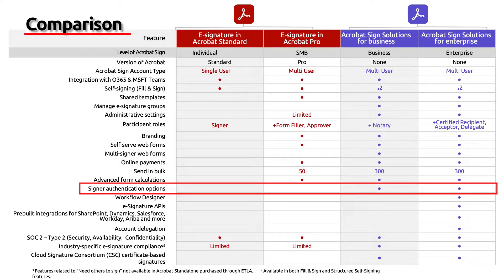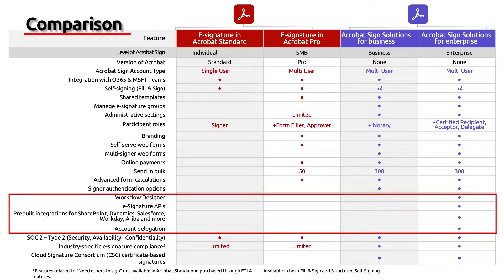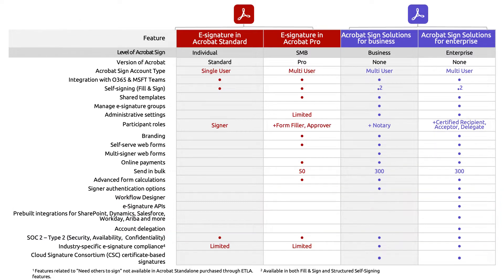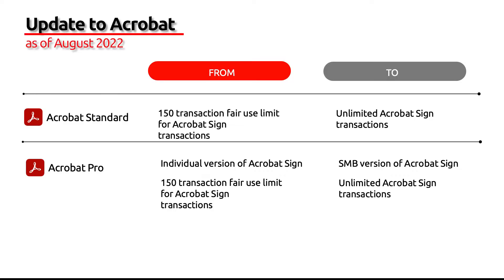As Adobe Sign is more for business or enterprise use, the following functionality is only available in Adobe Acrobat Sign: additional signer authentication besides email, pre-built workflows, integrations into applications like Salesforce, Workday, and more, as well as account delegation. With the latest update to Adobe Acrobat Professional and Standard, the previous limit of 150 fair use transactions per user per annum has changed to unlimited Adobe Acrobat Sign transactions. Also in Acrobat Professional, you're now using the SMB version of Adobe Acrobat Sign, giving you more functionality.